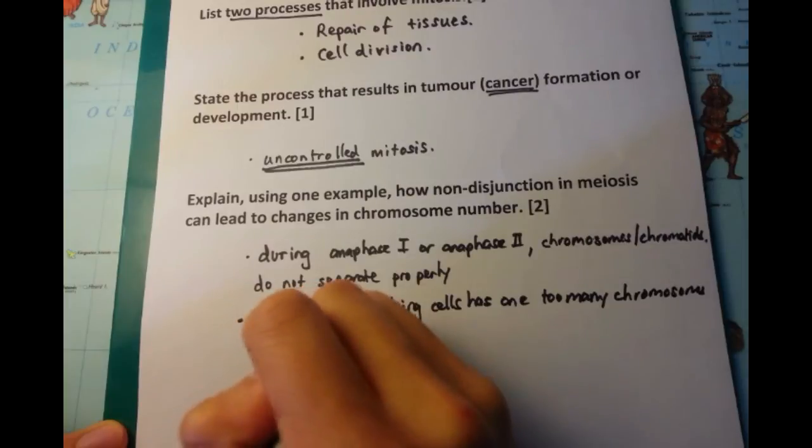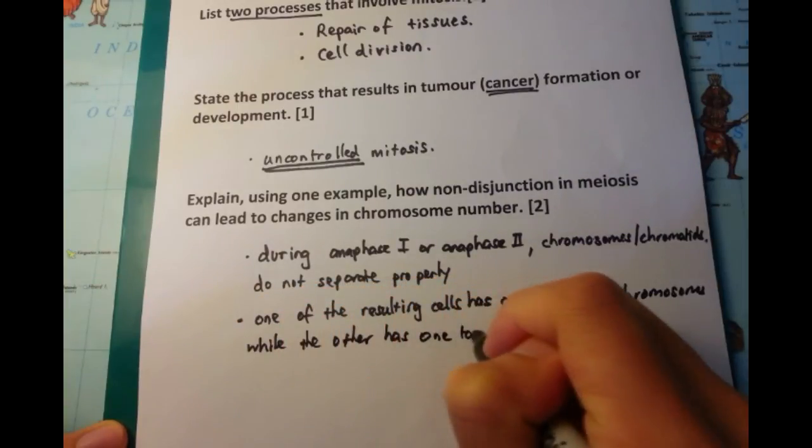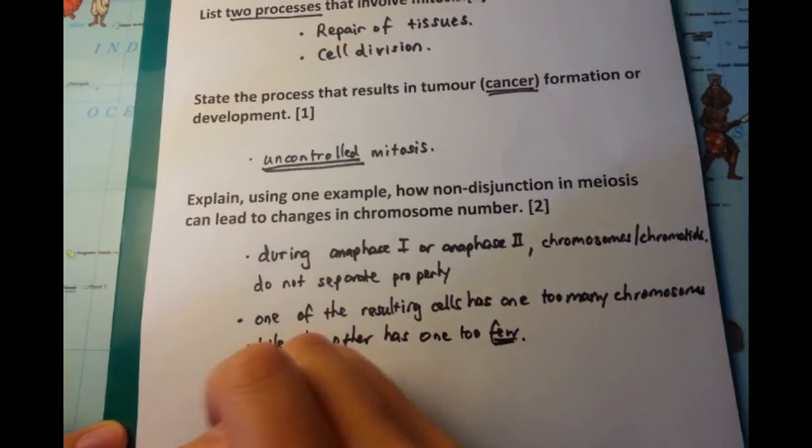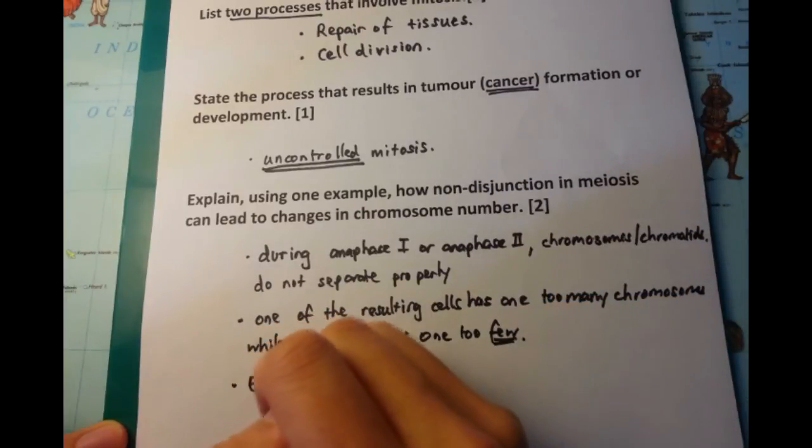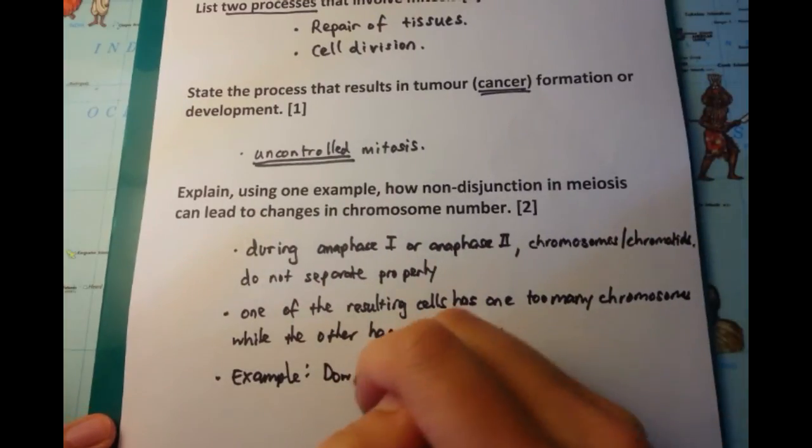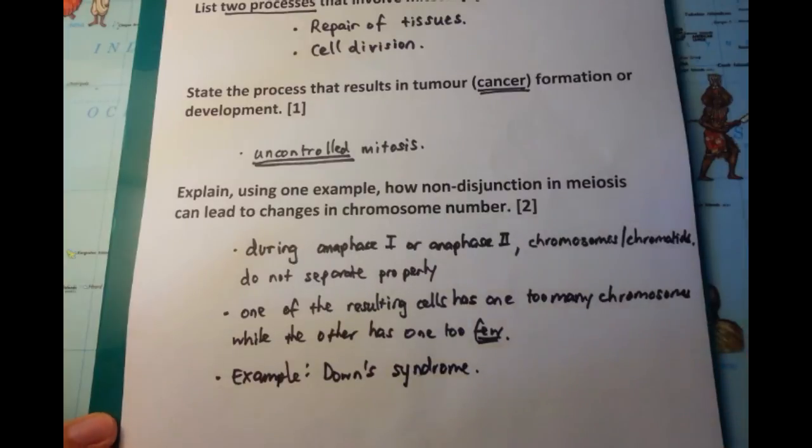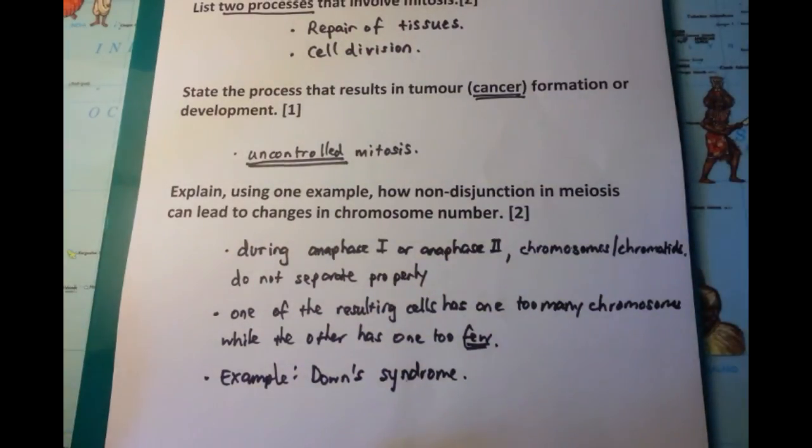Now, if that gamete that has two particular chromosomes, if that joins with a normal other gamete, then you're going to get two copies of chromosome 21 plus another normal copy of chromosome 21 leading to three copies of chromosome 21. This is trisomy 21 or Down syndrome. Remember to put down examples here because that can get you an easy mark as well.